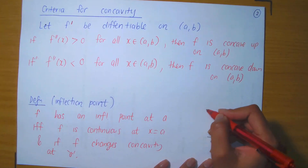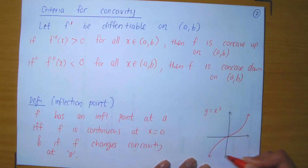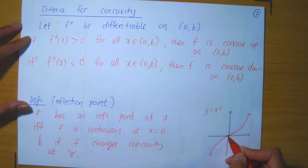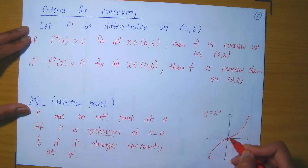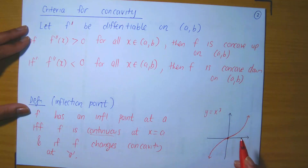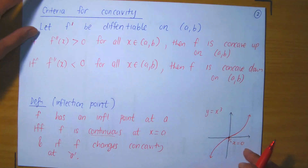A quick example of that is the function y = x³, your very basic cubic function. Up to the point x = 0, we are concave down, and then after x = 0 there is a change to concave up. At x = 0, the function is certainly continuous — I could have drawn this function without lifting my pen, and I certainly did not lift my pen at x = 0. So the conditions for x = 0 to be an inflection point are satisfied: it changes from concave down to concave up, and we are continuous at x = 0.